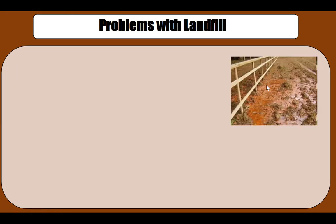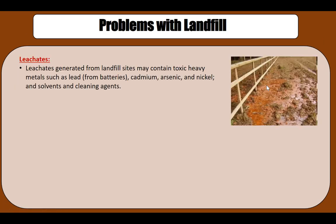Landfill has a lot of problems. In this picture you can see this gooey substance known as leachate. Leachate is generally generated from landfill sites and contains toxic heavy metals such as lead, typically coming from batteries, as well as cadmium, arsenic, nickel, solvents, and cleaning agents. All of these chemicals are part of the waste because of the things we throw in the landfill.